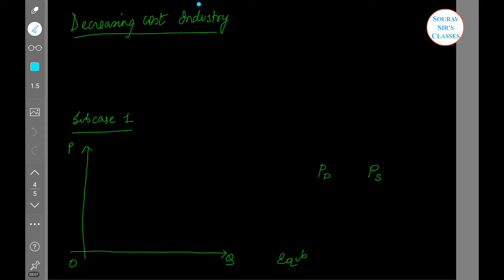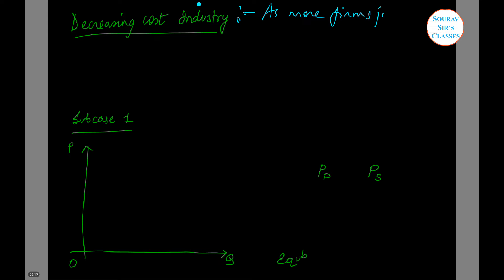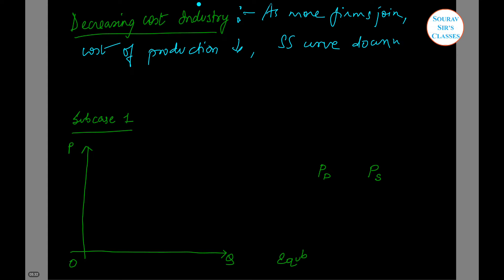Next we look at the decreasing cost industry. The feature of a decreasing cost industry is that as more firms join, the cost of production will fall. So as the cost of production falls, the supply curve will be downward sloping, which is generally not the case.